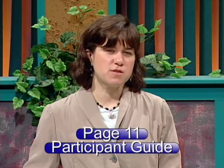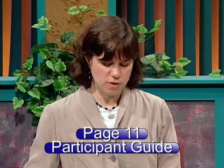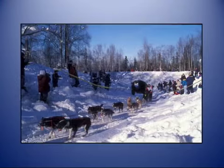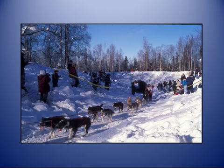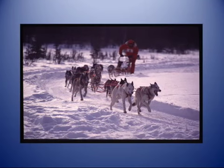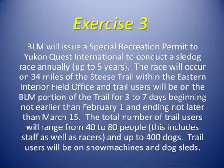Now open your participant guide to Exercise 3 and follow along with this example of how we're going to show the different pieces of a proposed action. The BLM will issue a special recreation permit to Yukon Quest International to conduct a sled dog race annually for up to five years. The race will occur on 34 miles of the Stice Trail within the Eastern Interior Field Office, and trail users will be on the BLM portion of the trail for three to seven days beginning not earlier than February 1st and ending not later than March 15th. The total number of trail users will range from 40 to 80 people, including staff as well as racers, and up to 400 dogs. Trail users will be on snow machines and dog sleds. Now we're going to diagram this proposed action and go through the who, what, how, when, and where.